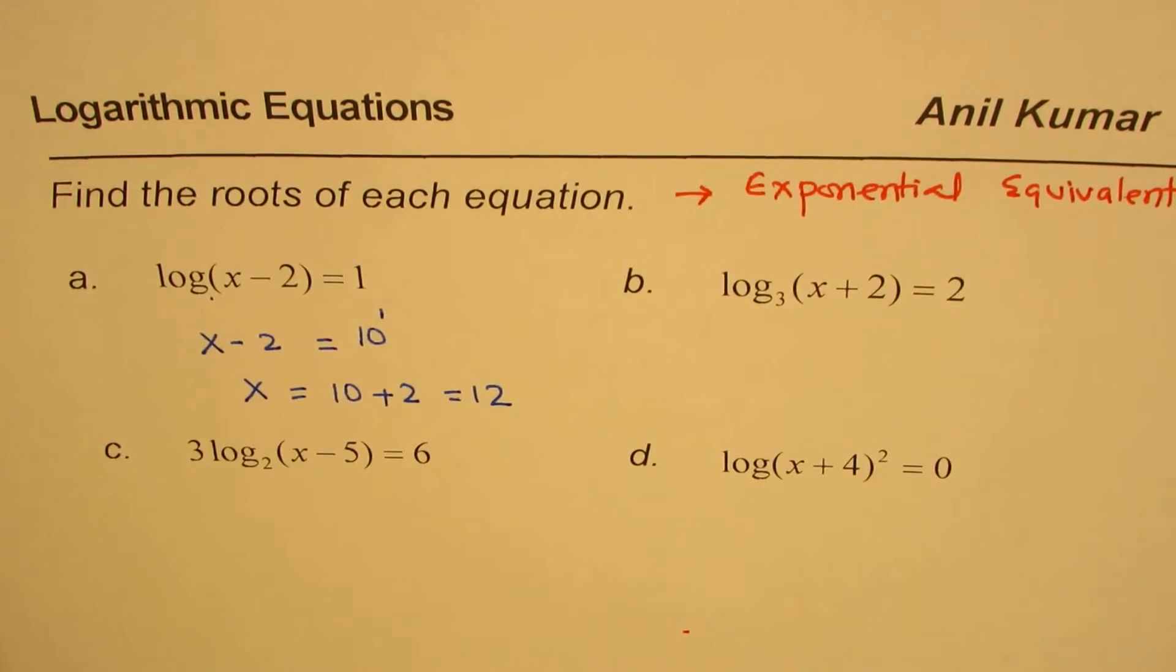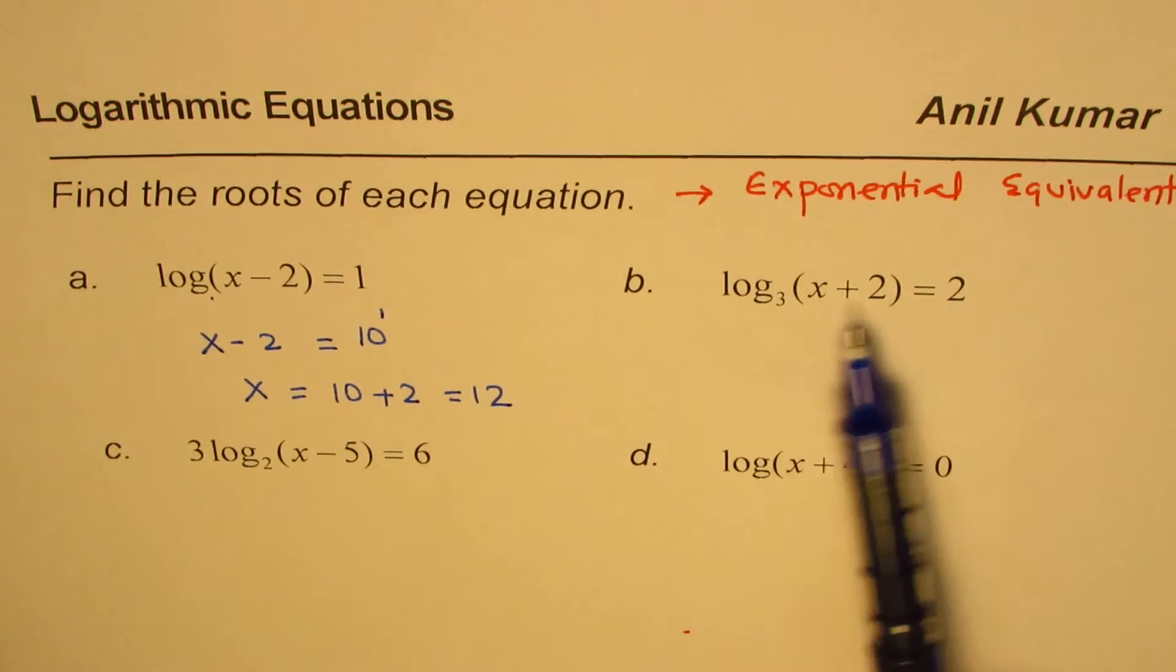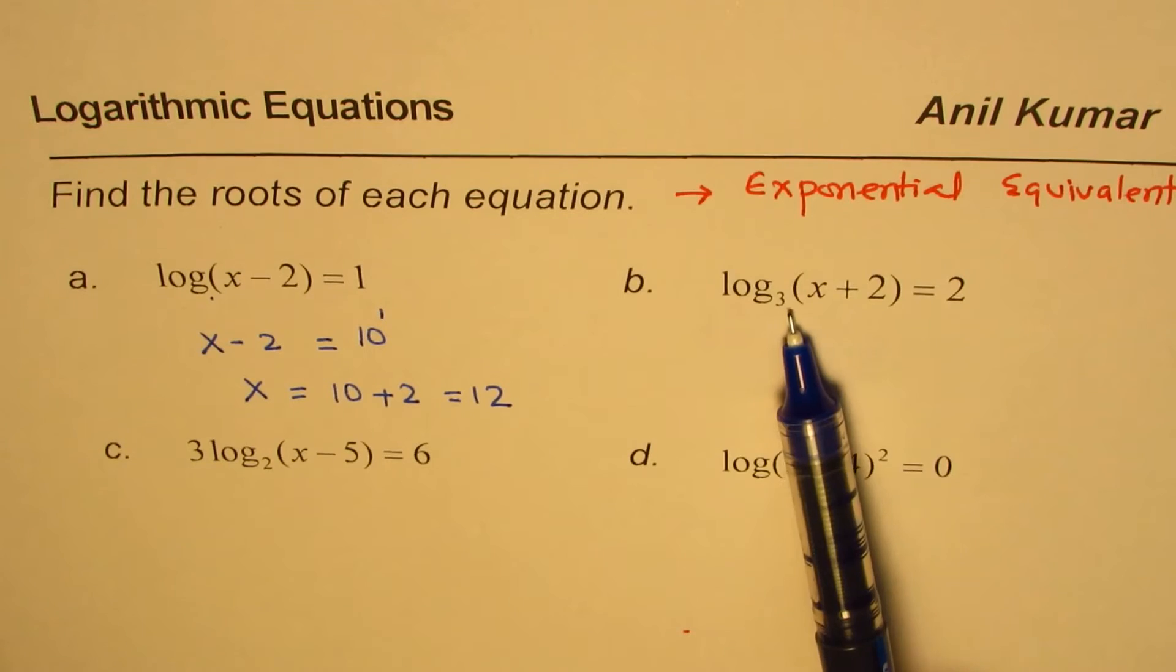You get an idea. So x equals 12 is the solution. So that is the way. First you write it in exponential form. Let's do this process once again.